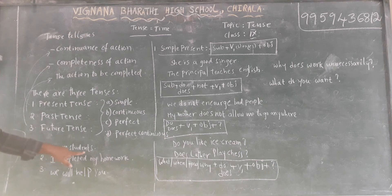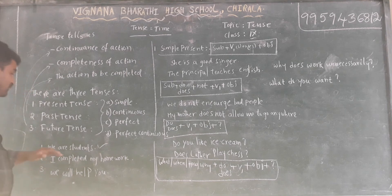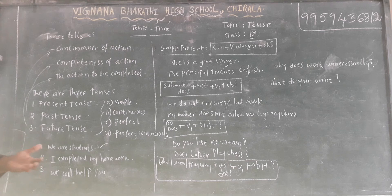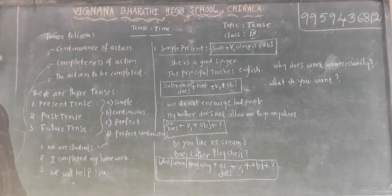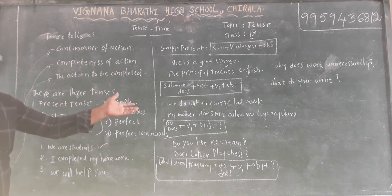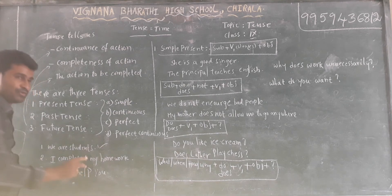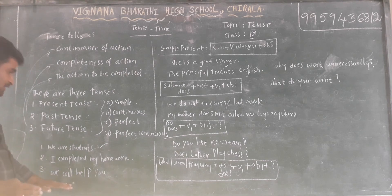See here: 'We are students.' 'I completed my homework.' 'We will help you.' In the first sentence, we are students now — we are studying. 'I completed my homework' means I have already completed it — yesterday, last week, last hour. And 'We will help you' — the help has not been given yet, but we will help after sometime, after one day or two days.